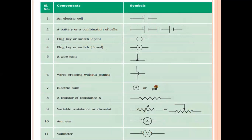The next slide shows different electrical components and their symbols. An electric cell is represented by two vertical lines — the bigger one acts as the positive terminal and the smaller one as the negative terminal. A battery is a combination of cells connected in series. We also have plug key open, plug key closed, a wire joint, wires crossing without joining, a symbol for electric bulb, a resistor of resistance R, variable resistance or rheostat, ammeter, and voltmeter.